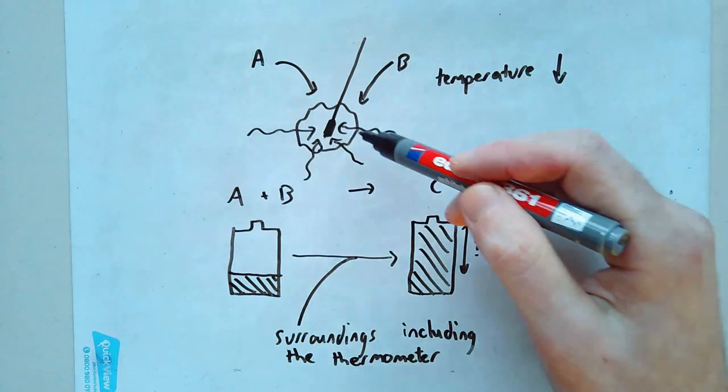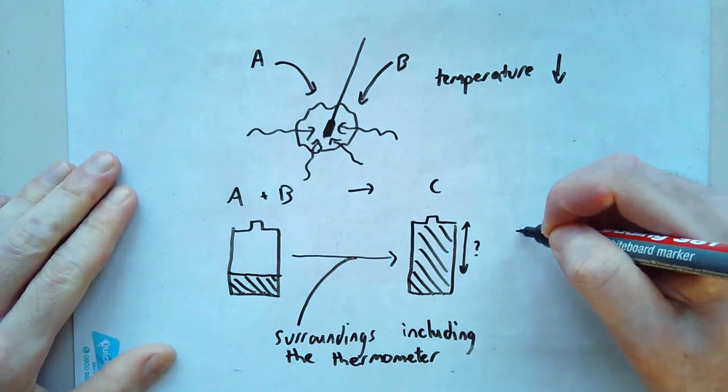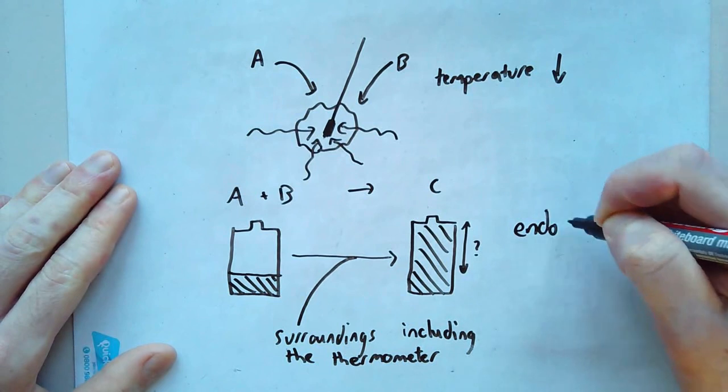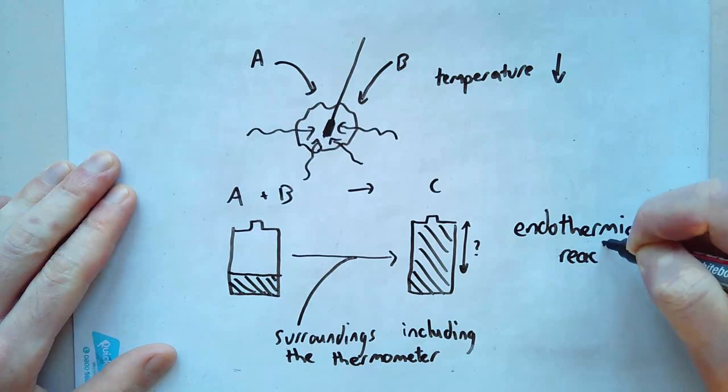From the surroundings, from everything that's around it. You'd feel cold because your hand is losing energy. We call this an endothermic reaction.